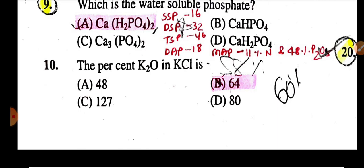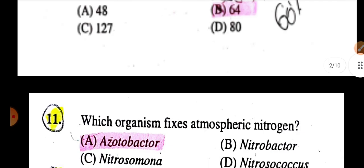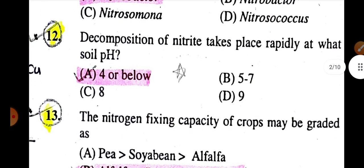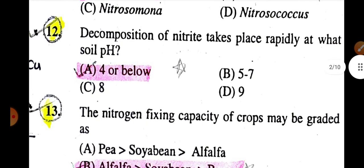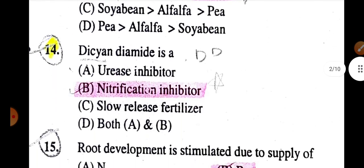The percentage of K2O in KCl is 64%. Which organism fixes atmospheric nitrogen is Azotobacter. Decomposition of nitrate to N2 rapidly occurs at low pH of 4 and below. The nitrogen-fixing capacity of crops may be graded as Alfalfa greater than Soybean greater than Pea.